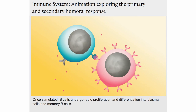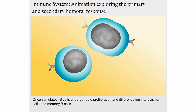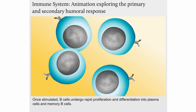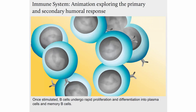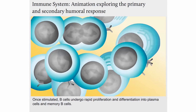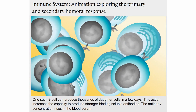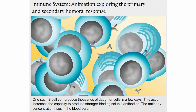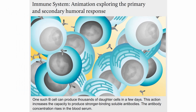Once stimulated, B-cells undergo rapid proliferation and differentiation into plasma cells and memory B-cells. One such B-cell can produce thousands of daughter cells in a few days. This action increases the capacity to produce stronger binding, soluble antibodies. The antibody concentration rises in the blood serum.